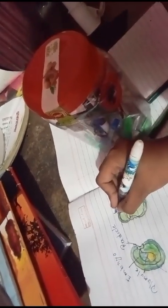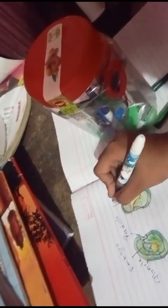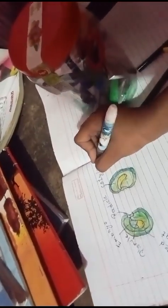Then this you need to draw like this, and this name is cotyledon: C-O-T-Y-L-E-D-O-N.